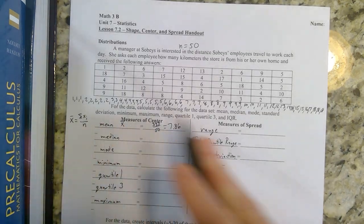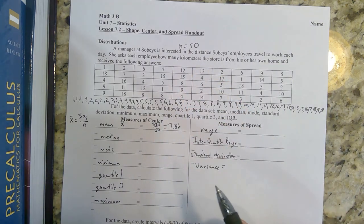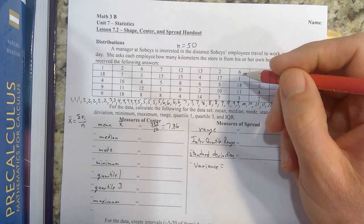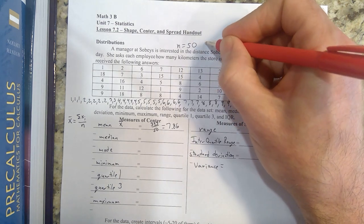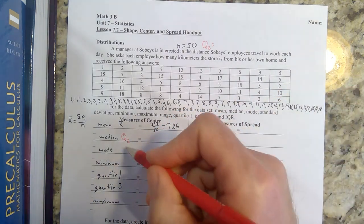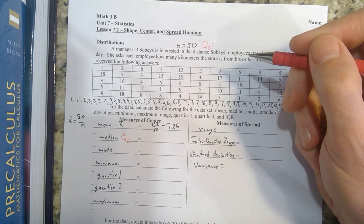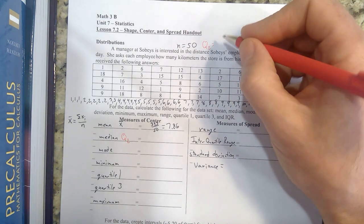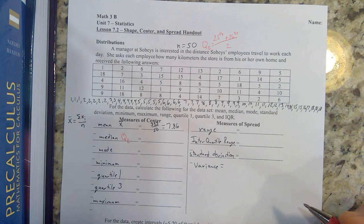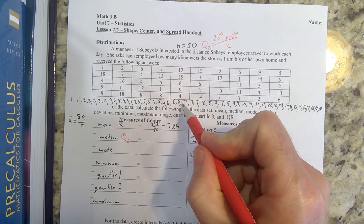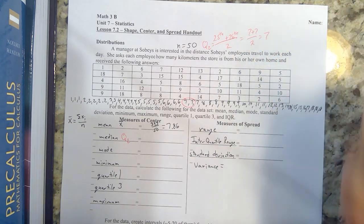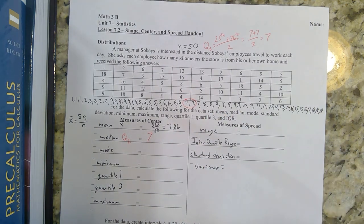To find the median, I need to find the middle value. If there's 50 numbers, there isn't a single middle value. There's going to be two numbers that are both in the middle. Q2, that's the abbreviation for the median, meaning the second quartile or 50th percentile. I would take the 25th entry plus the 26th entry and divide it by two. Counting those out, seven plus seven divided by two is seven. So my median here is seven.